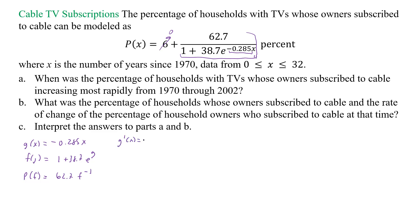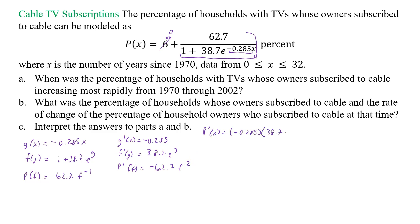So g prime of x is equal to negative 0.285, f prime of g is equal to 38.7 e to the g, and p prime of f equals negative 62.7 f to the negative 2. So from this, my p prime of x is equal to negative 0.285 times 38.7 e to the negative 0.285x, and then that's times negative 62.7, and then times 1 plus 38.7 e to the negative 0.285x to the negative 2.